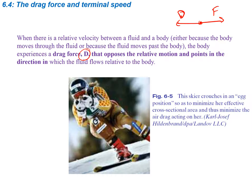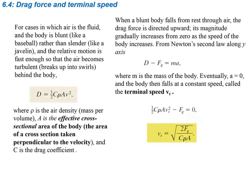If you were falling down through the air, like a skydiver, you have weight pulling you down and the drag force acting upward. For cases where air is the fluid and the body is blunt — like a baseball rather than a slender javelin — the relative motion is fast enough that the air becomes turbulent, breaking up into swirls behind the body, and this creates drag.